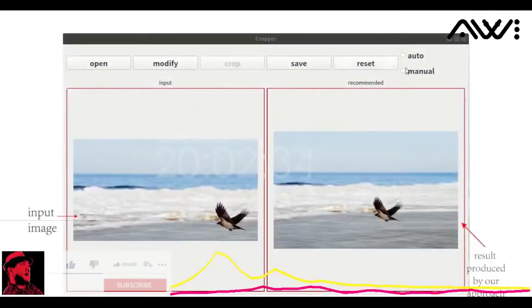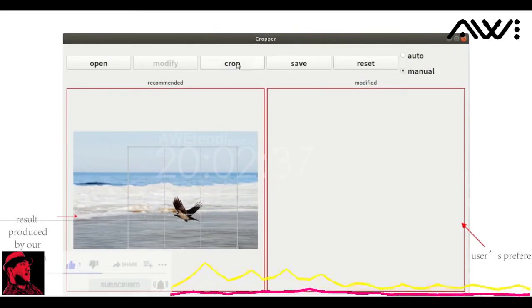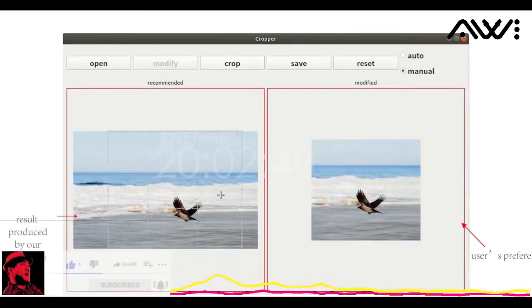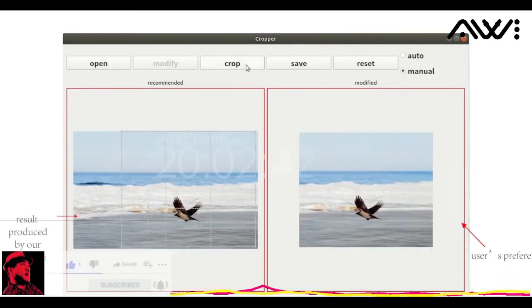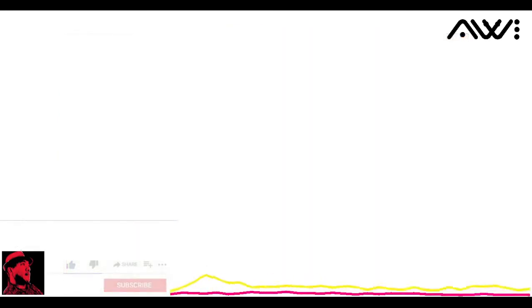Besides, we provide an interactive interface for the user to manually crop photos inside or outside the image according to both the user's visual preferences and the optimal view computed by our algorithm.